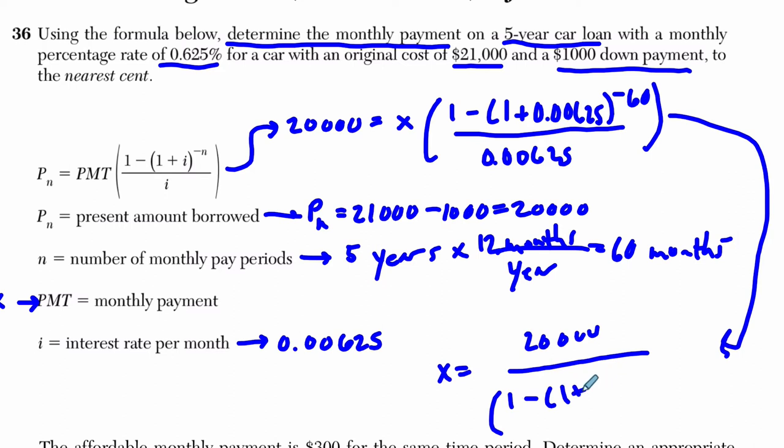$20,000 divided by this thing right here, 1 minus 1 plus 0.00625 to the negative 60, that over 0.00625.